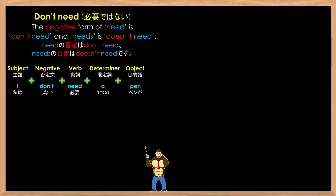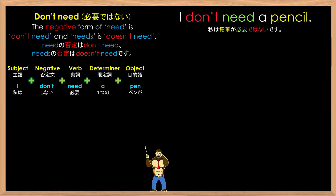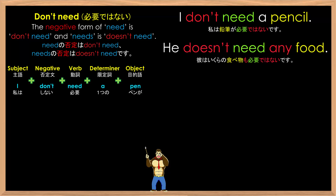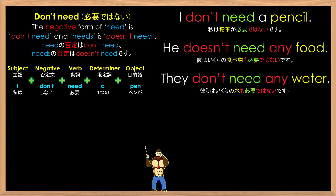The negative form of need is don't need, and needs is doesn't need. For example: I don't need a pencil. He doesn't need any food. They don't need any water. As you can see, we use don't and doesn't depending on the subject.